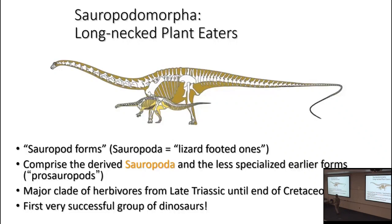Sauropodomorphs first appear early in the late Triassic and die out at the end of the Cretaceous. Not only did they fill up a lot of that time span, they were the first successful group of dinosaurs. Ornithischians were vanishingly rare in the Triassic record; herrerasaurs and theropods are around but not super abundant. But by the second half of the late Triassic, sauropodomorphs are actually pretty common animals.